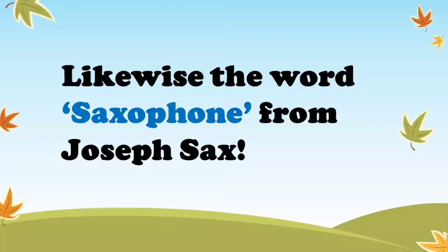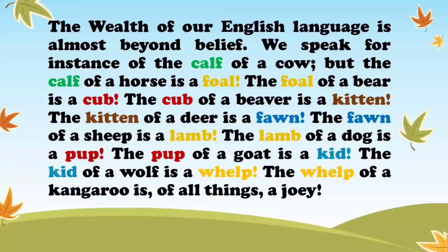An added delight is how he begins each chapter of his book with such glowing, enduring descriptions on the beauty of the English language. Take, for example, the introductory lines to chapter 11, where he talks in detail about where our word origins for animal names come from. And I read: 'The wealth of our English language is almost beyond belief. We speak, for instance, of the calf of a cow. But the calf of a horse is a foal. The foal of a bear is a cub. The cub of a beaver is a kitten. The kitten of a deer is a fawn. The fawn of a sheep is a lamb. The lamb of a dog is a pup. The pup of a goat is a kid. The kid of a wolf is a whelp. The whelp of a kangaroo is, of all things, a joey.'